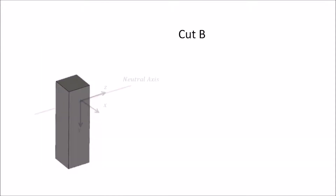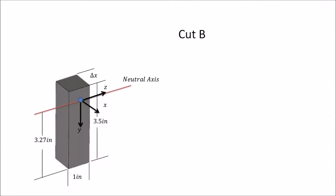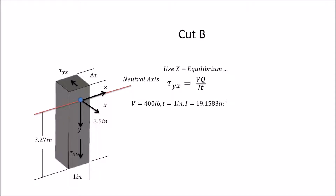Let's move on to cut B, located 3.5 inches up from the base of the web. Using x-equilibrium and τ_yx = VQ/It, with V = 400 pounds, t = 1 inch, and I = 19.1583 in⁴, Q for this section is 3.5 × 1 × (3.27 − 1.75) inches, giving Q = 5.32 in³. Plugging all values in, τ_yx ≈ 111.075 psi.